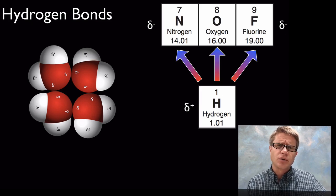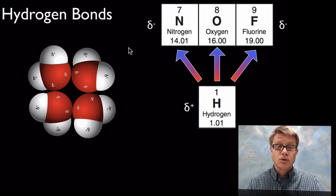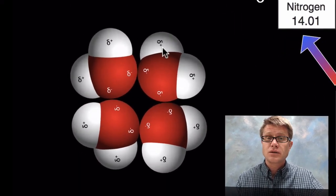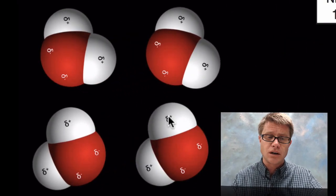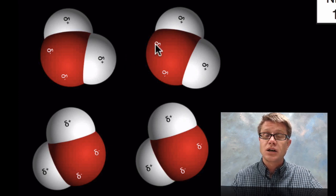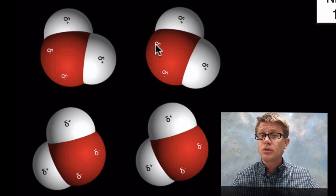A specific type of dipole-dipole is a hydrogen bond. Many people think it's between hydrogen and just anything else — it's not. A hydrogen bond occurs when we have hydrogen bonded to either nitrogen, oxygen, or fluorine. In water, hydrogen is bonded to oxygen, so we have unequal sharing, creating a dipole — a negative side where the oxygen is and a positive side where the hydrogen is. The hydrogen bond forms between the hydrogen and the oxygen of an adjacent molecule.